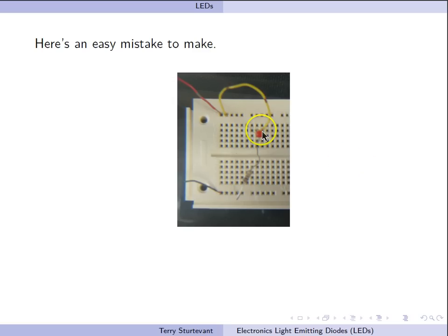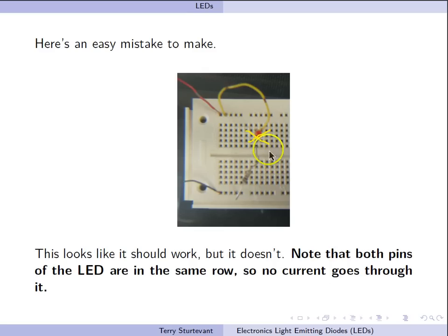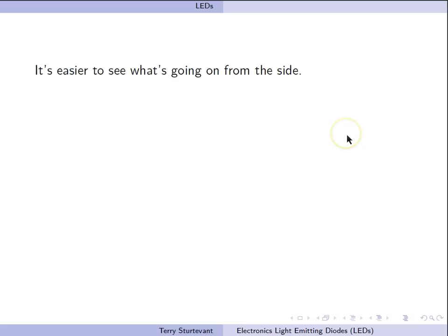Now here is something that looks very similar, but the LED isn't lit up. Take a look at where the resistor goes. The problem is, the resistor goes across the trough, so both pins of the LED are in the same row. It's easier to see this from the side.